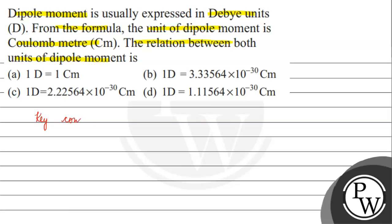The key concept for this question is dipole moment. What happens in this type of moment? We have a covalent bond. In 100% covalent character, the electrons are shared equally between the two atoms.